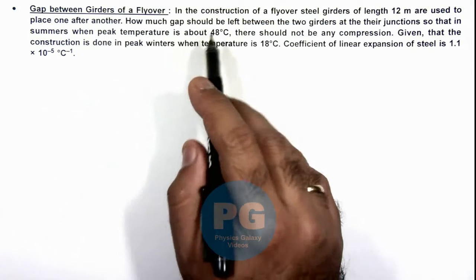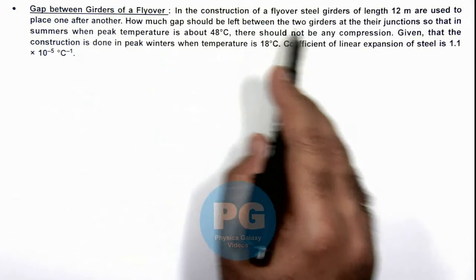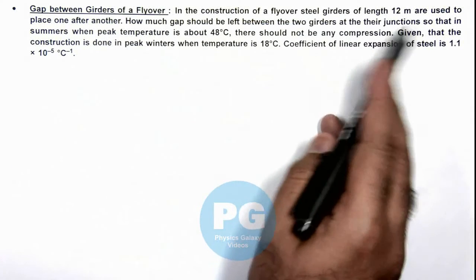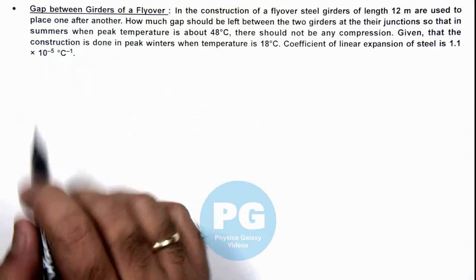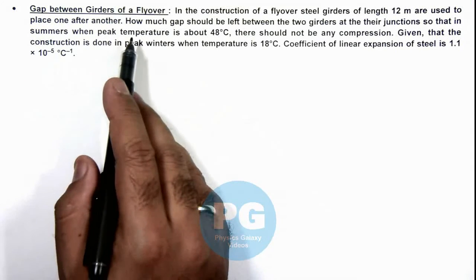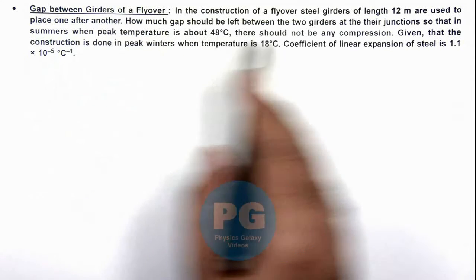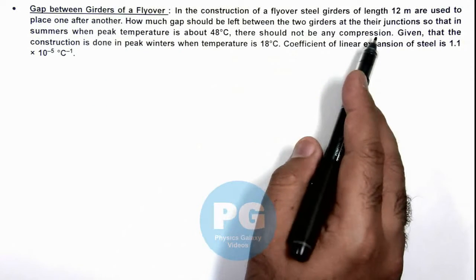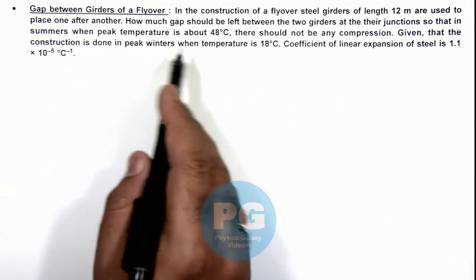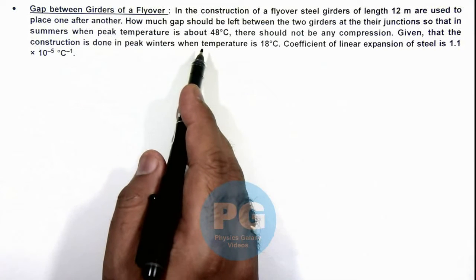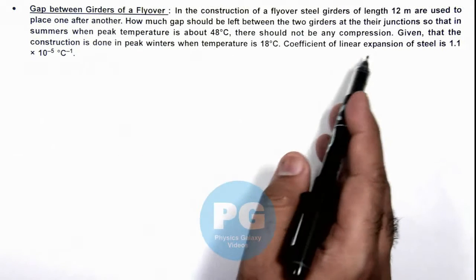We are given that in the construction of a flyover, steel girders of length 12 meters are used to place one over another. We are required to find how much gap should be left between the two girders at the junction, so that in summers when peak temperature is about 48°C, there should not be any compression in the girders.